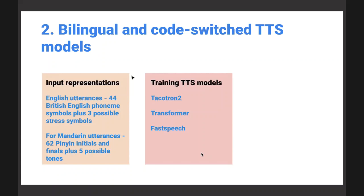For TTS, the input representations have two possible options: characters or phonetic representations - phoneme symbols representing the distinct sounds in a spoken sentence. For English there are 44 British English phoneme symbols plus three possible stress symbols: primary stress, secondary stress, and unstressed. For Mandarin, they use Pinyin representation, which represents Chinese using English letters, with five possible tonal variations.